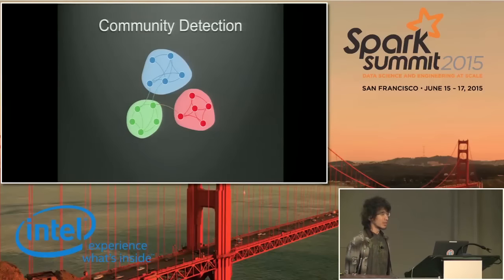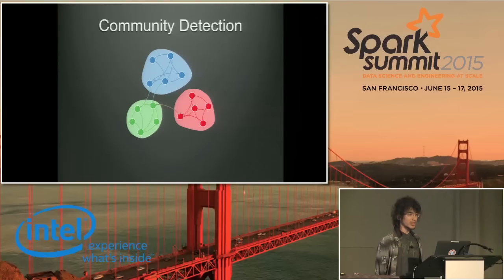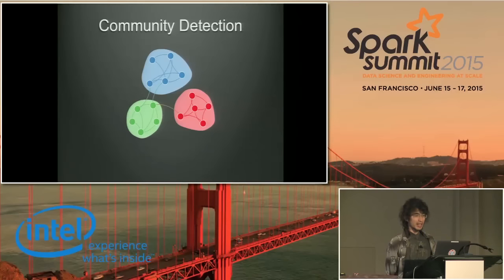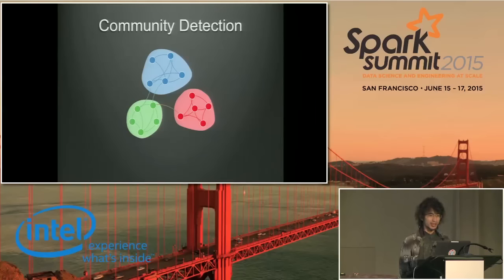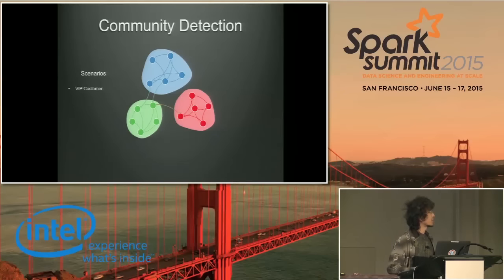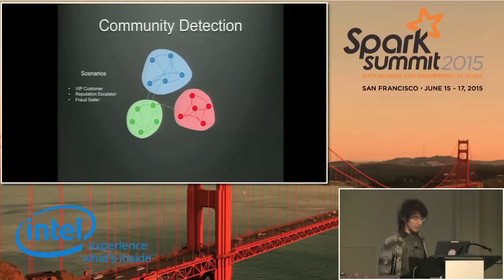First, I want to introduce community detection. Community detection is a very traditional and popular problem in graph theory. It is to detect the natural communities in a network. The basic idea is to keep as many internal links as possible inside communities. There were many cases in Alibaba where we can use this, especially in security cases. Transactions happen every day and we need to find communities in different scenarios, such as VIP customers, reputation accelerators, and fraud sellers, et cetera.